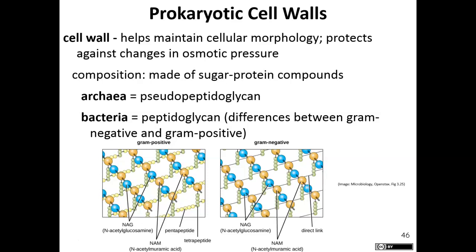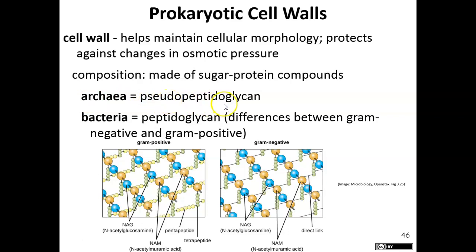Protozoans do not have cell walls, but most other organisms do. The archaeans have a substance in their cell wall known as pseudomurin or pseudopeptidoglycan, whereas bacteria have a substance called peptidoglycan. This allows us to separate archaea from bacteria — no other organisms have pseudopeptidoglycan, and no other organisms have peptidoglycan.